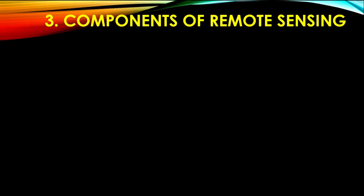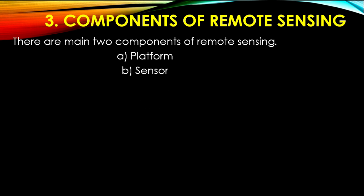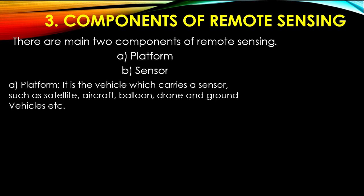Components of remote sensing: there are two main components of remote sensing — one is platform and two is sensor. Platform is the vehicle which carries a sensor, such as satellite, aircraft, balloon, drone, and ground vehicles.